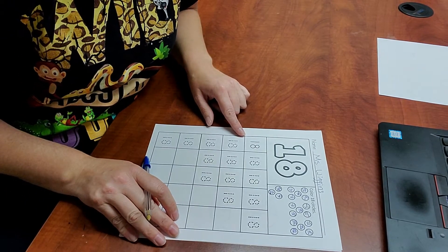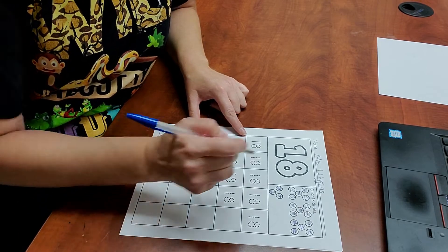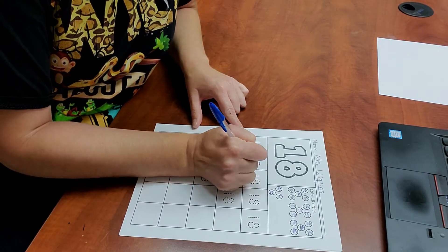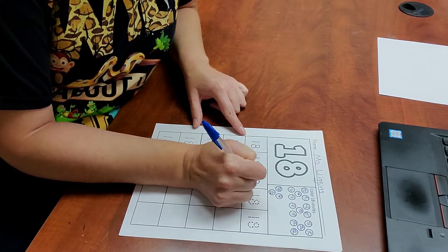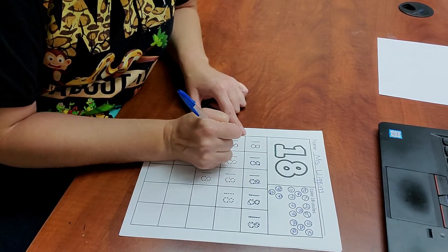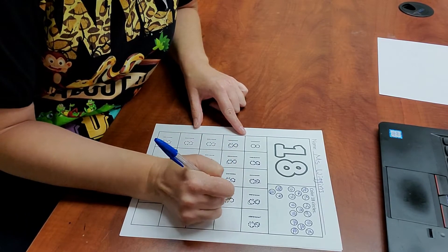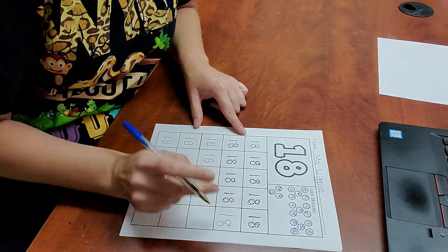Now we're going to trace our number 18s and then in the blank squares, we're going to write it by ourselves. So go ahead and start tracing. And then when we come to the blank square, write the 18 by yourself, just like this.